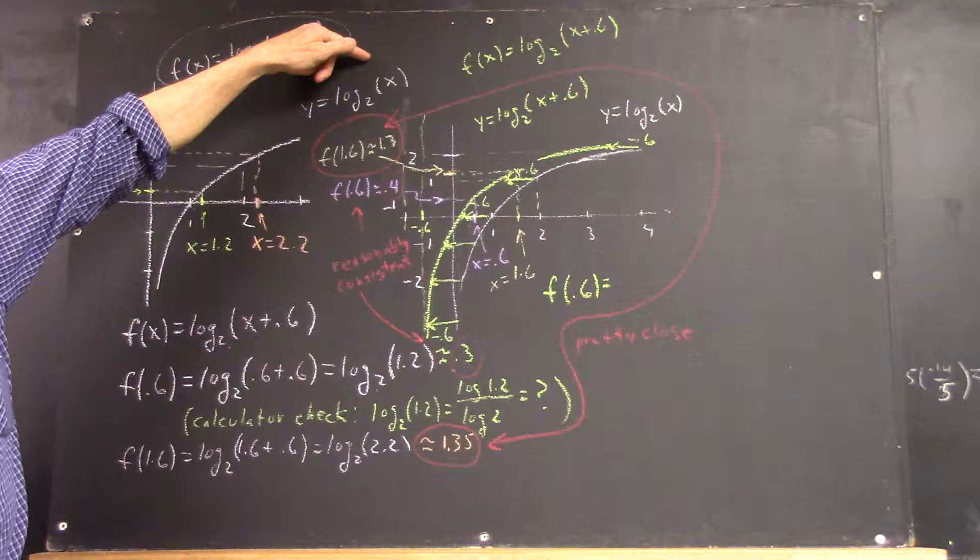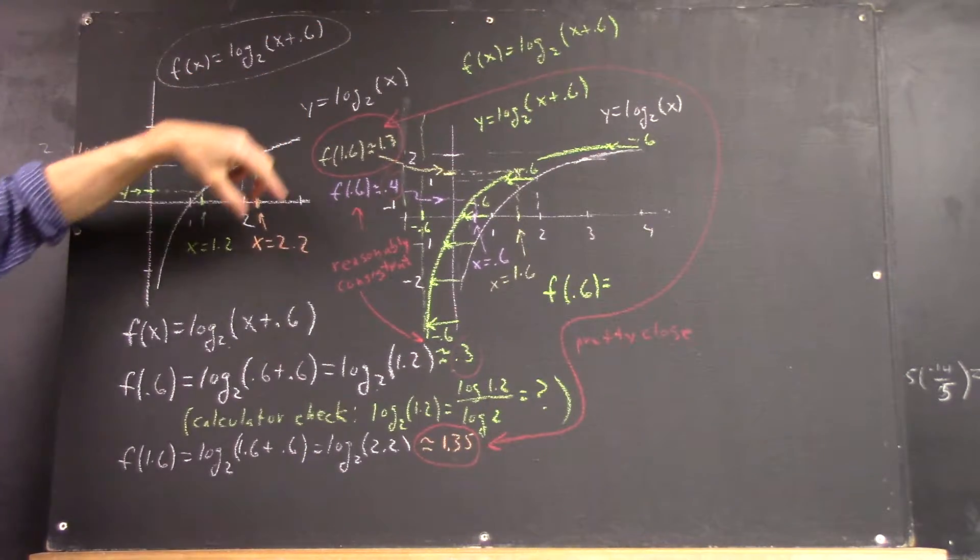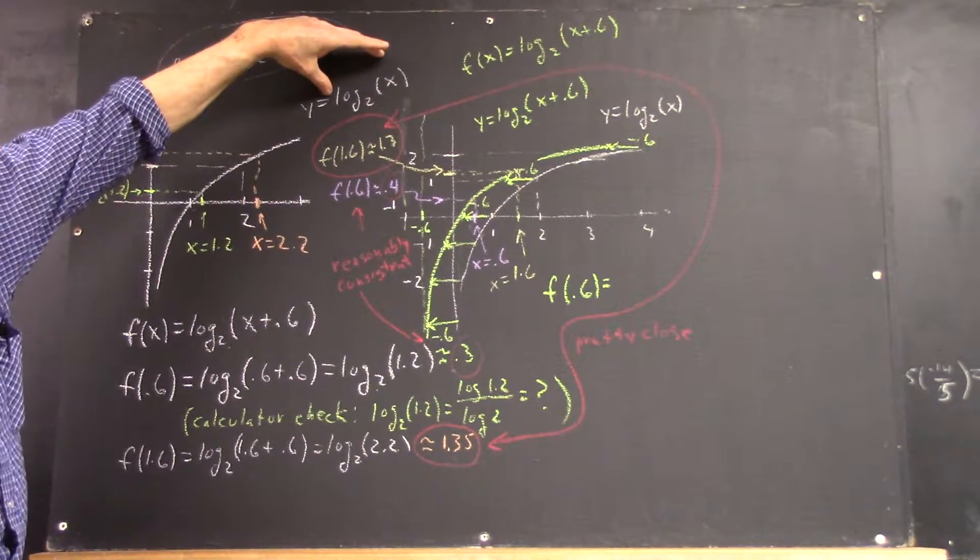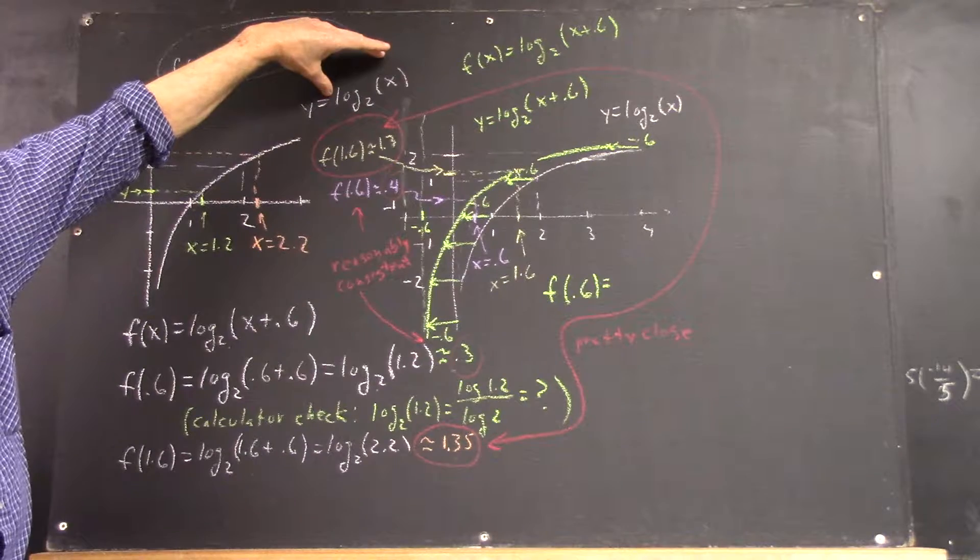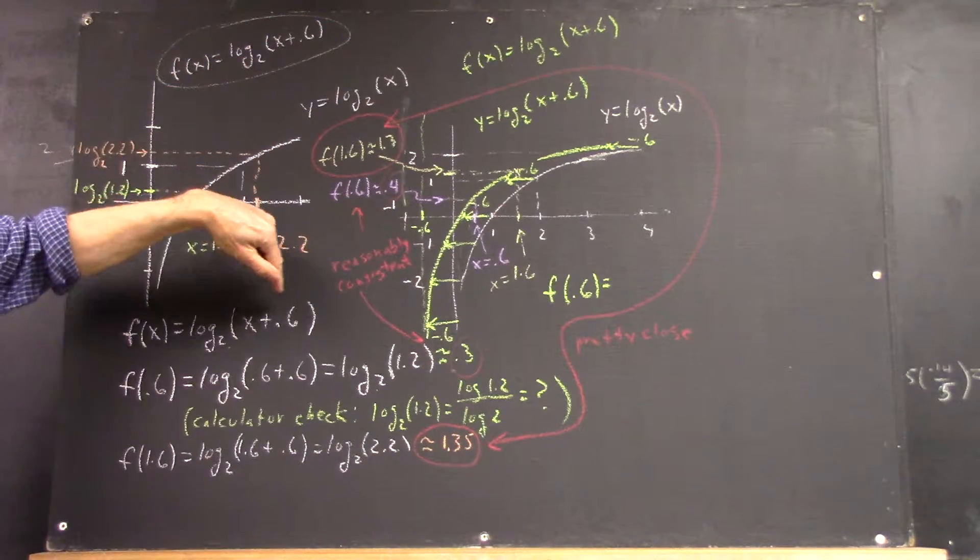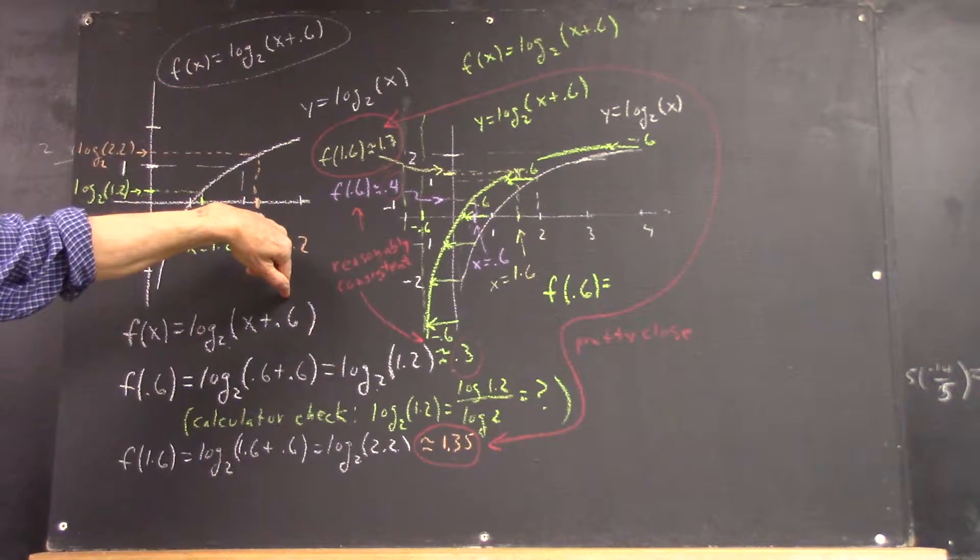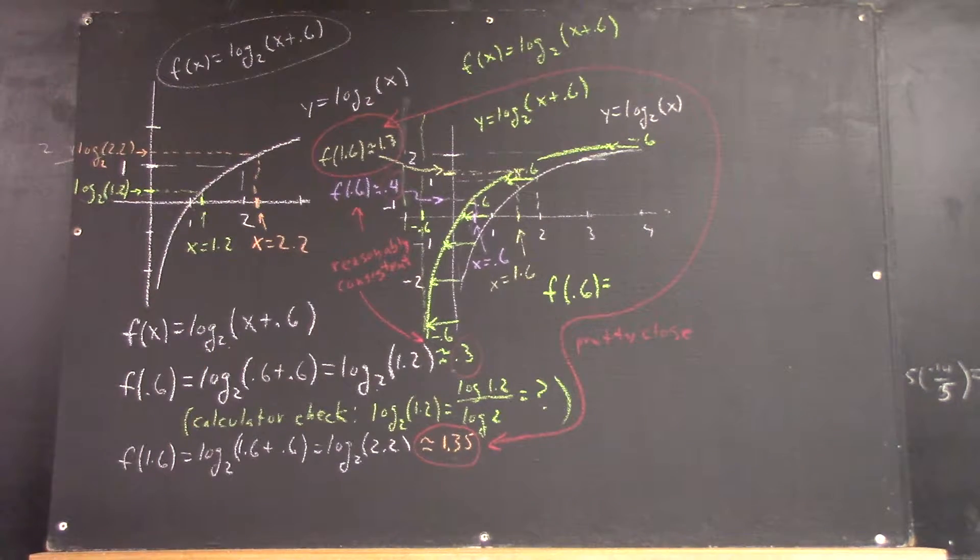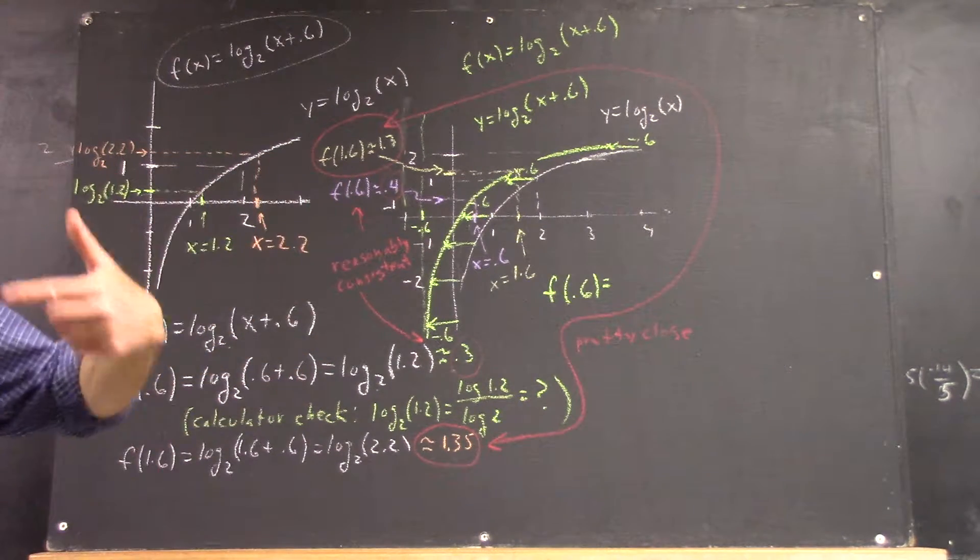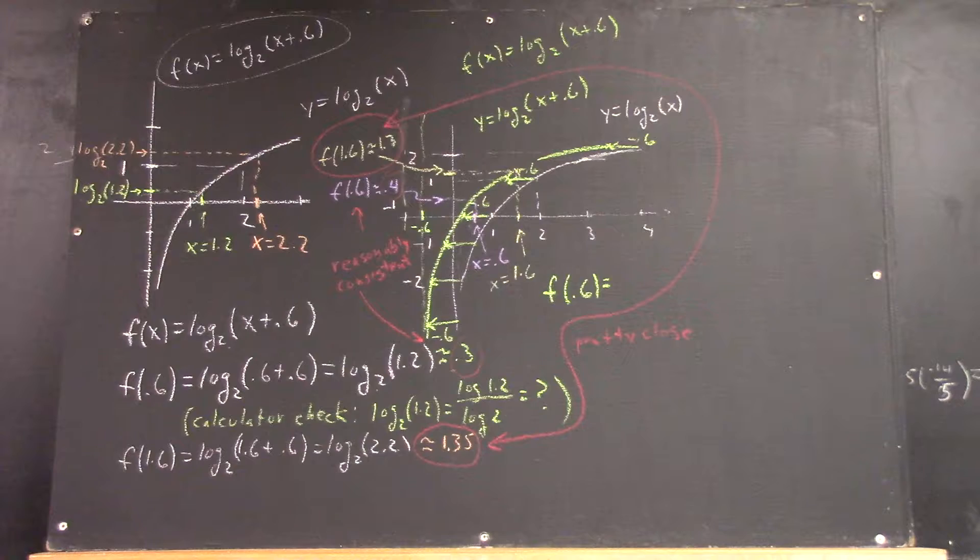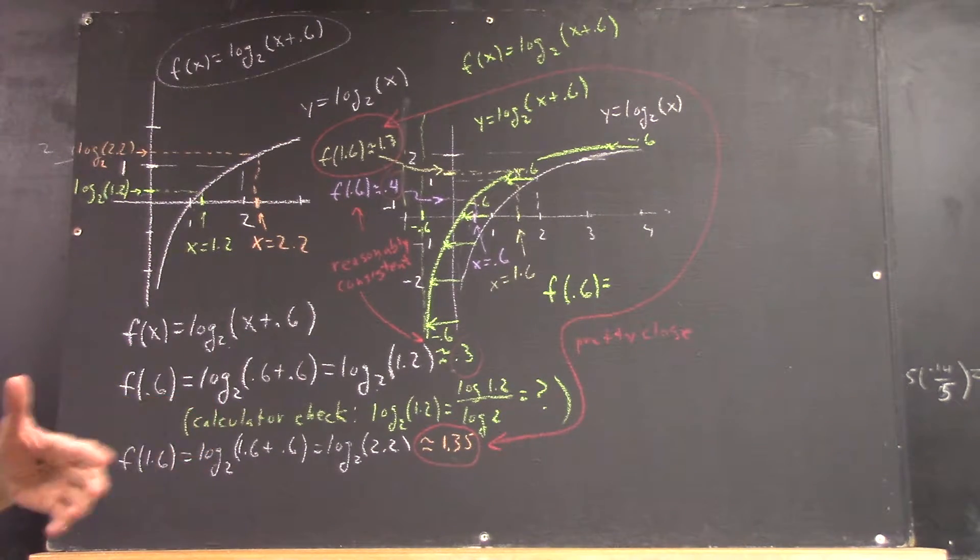Now, you should be able to answer that very quickly. What's the difference between this and this? I've replaced x by x plus 0.6, right? What's that do to the graph? Shifts it 0.6 units in the negative x direction. That's something you simply have to know.